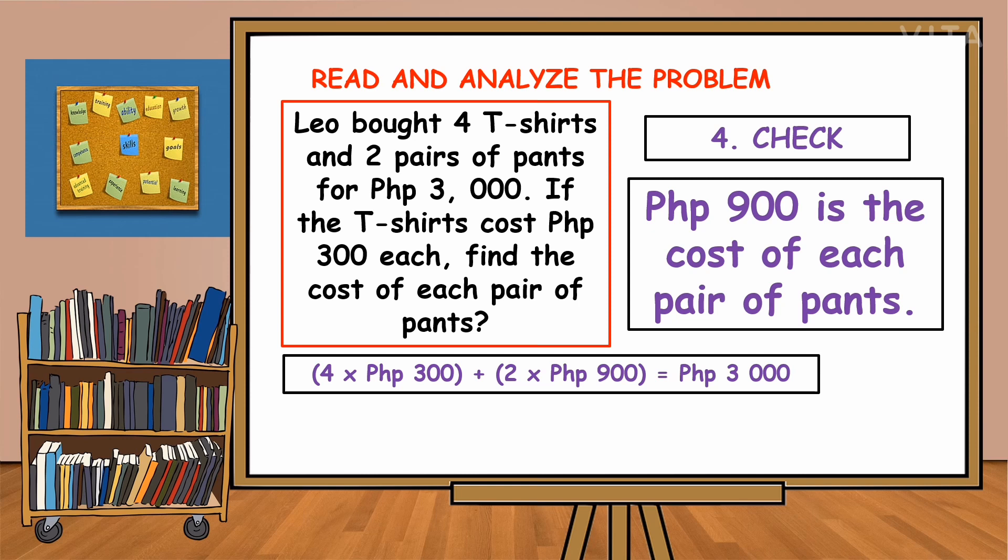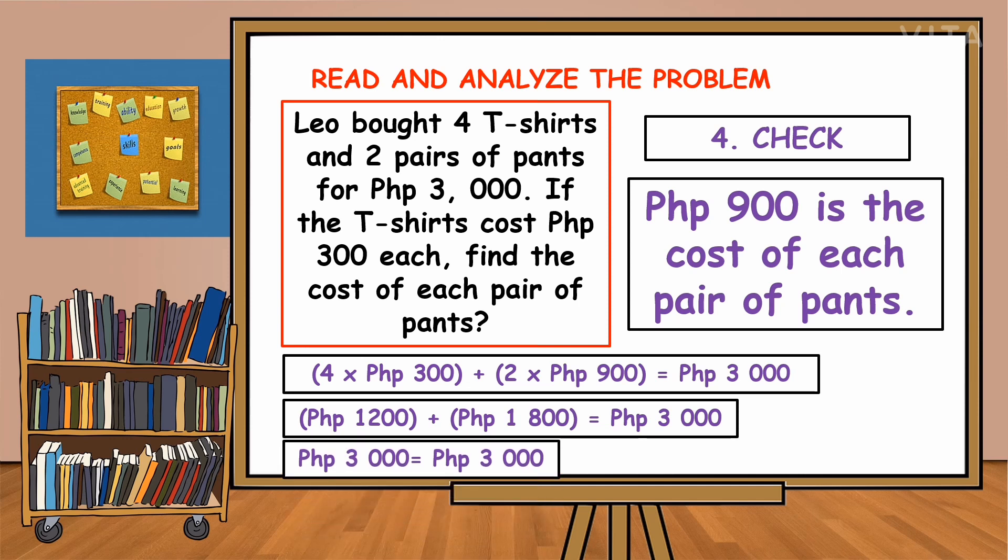Multiply 4 by 300, the answer is 1,200 pesos. Plus 2 times 900 pesos, the answer is 1,800 pesos, equals 3,000 pesos. When we add 1,200 plus 1,800, it should also equal 3,000. So 3,000 is equal to 3,000. The answer is correct.